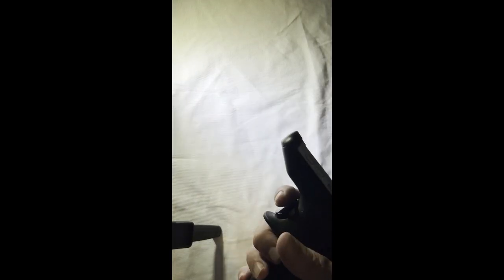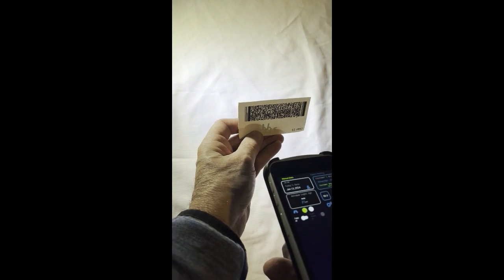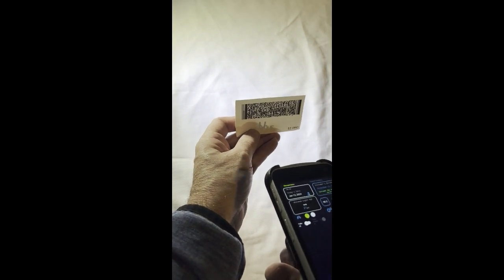To scan the ID, touch the trigger and hold the ID with the barcode facing towards the tablet about 3 inches from the scanner.